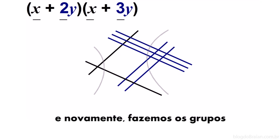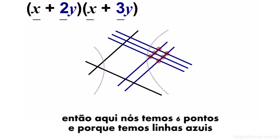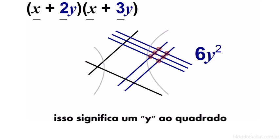The other number, we draw the lines in the other direction. And again, we make groupings. So here we have six dots, and because both of the lines are blue, that means it's y squared.